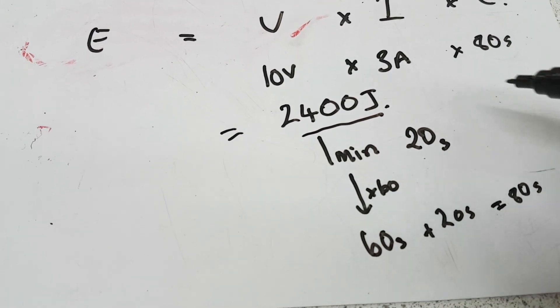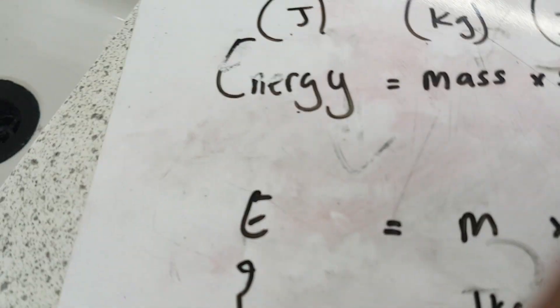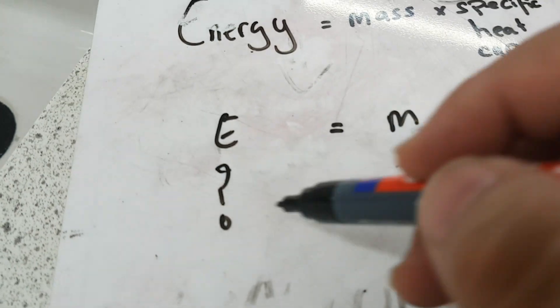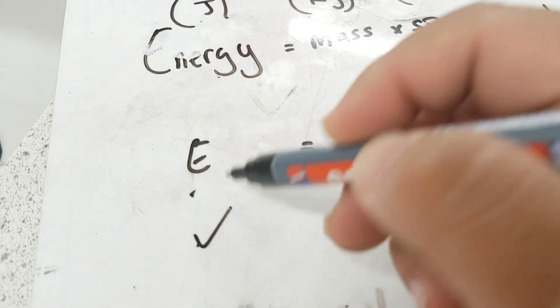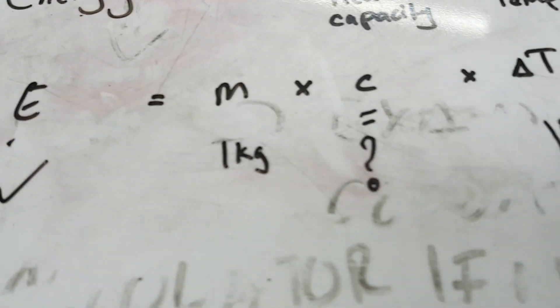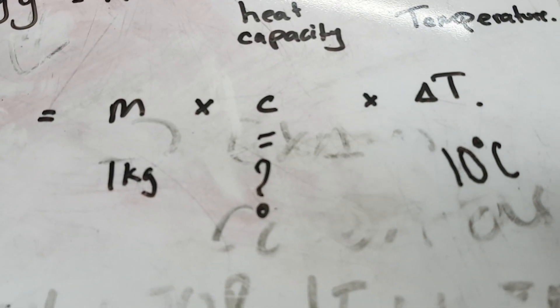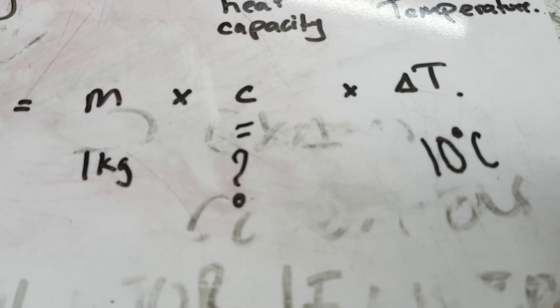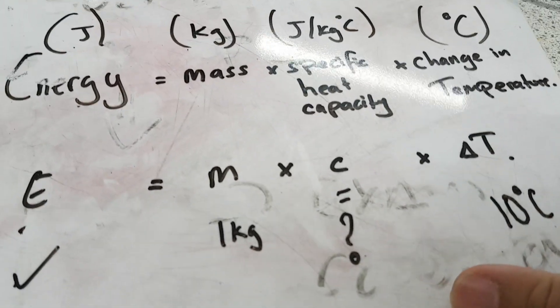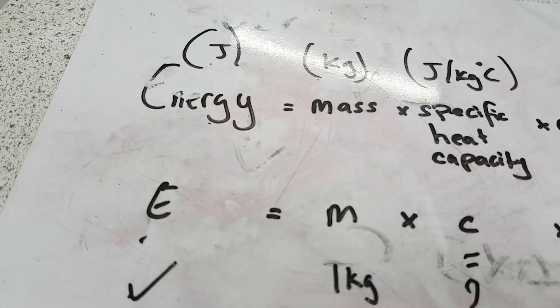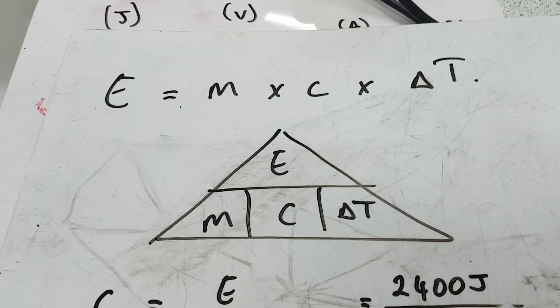So now, now that we've worked out our energy, we can go back to this equation. Do we know our E? Yes, we do. So I'm going to, that's no longer an unknown. We know E, we know M, we don't know C, and we waited for our delta T to go up by 10 degrees. So, what we're going to do now is we're going to rearrange this equation to work out a specific heat capacity.